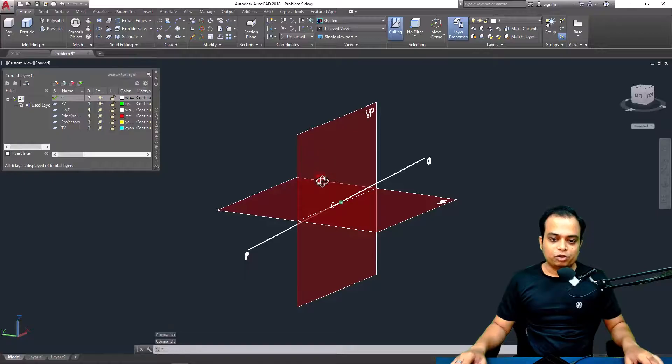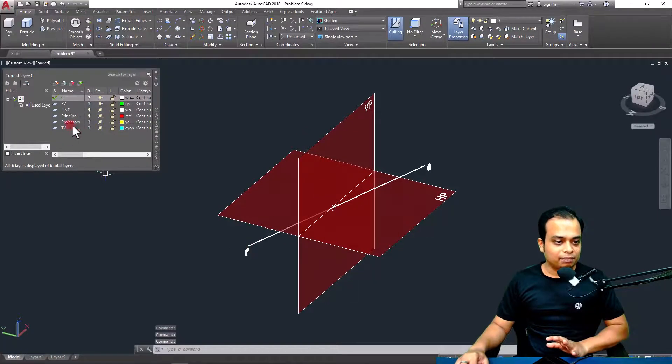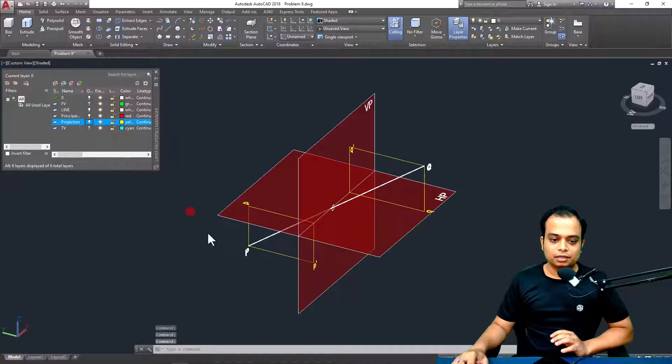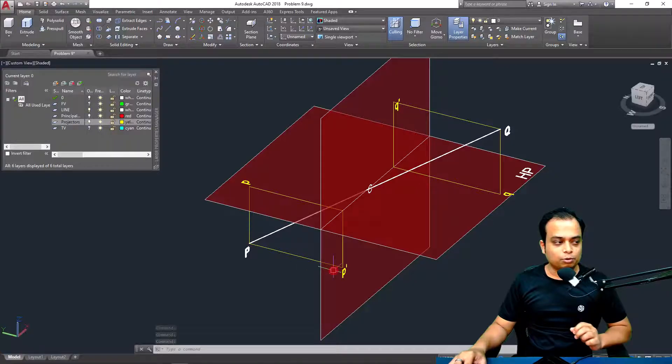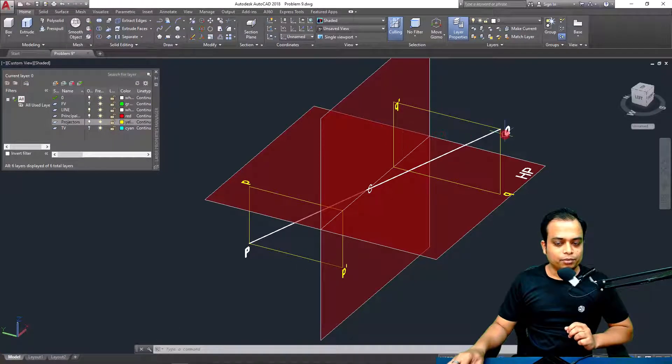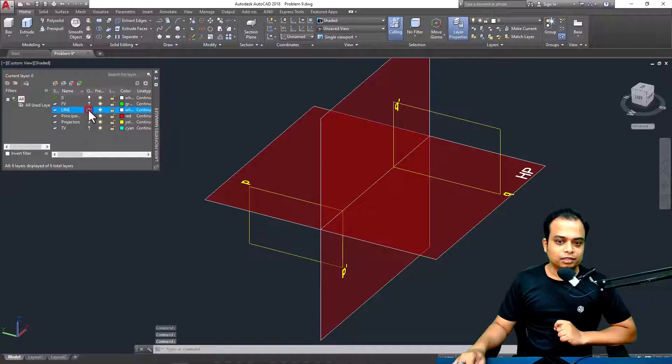What about the projections? Can you make the projections for point P and Q? Here are the projectors. Point P and its corresponding top view. Point P and its corresponding front view. Point Q and its corresponding top view. Q and its corresponding front view. Let me erase the original line.